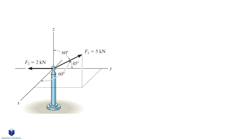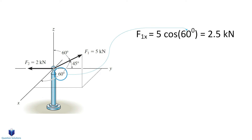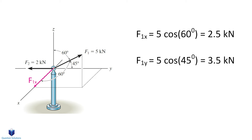We can start by writing the x component of force F1. That's equal to 5 kN multiplied by cos 60 degrees. You can see that we are multiplying the force by the angle between the positive x-axis and the force itself. The pink dashed line shows the x component of force F1 along the x-axis.